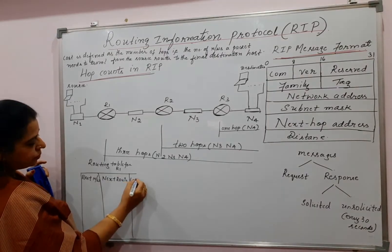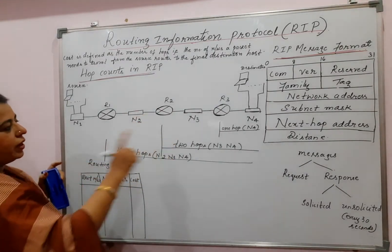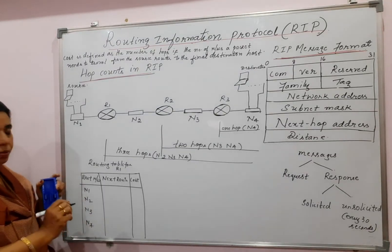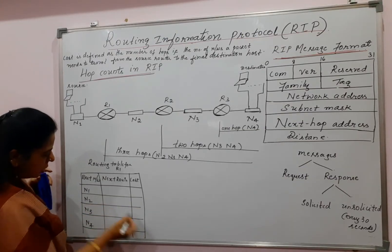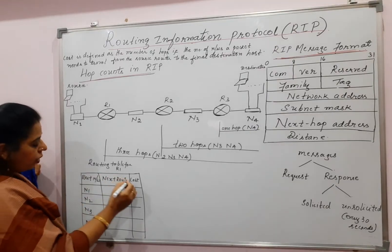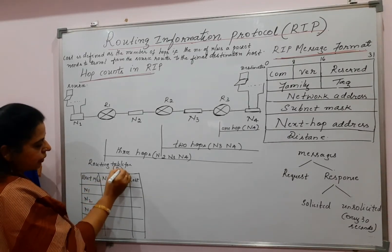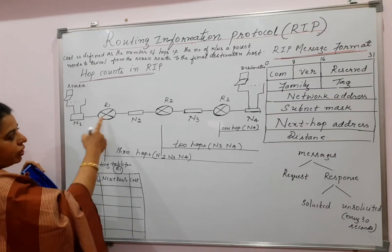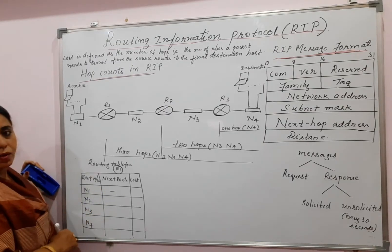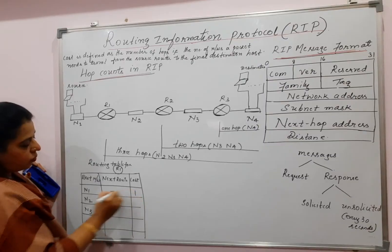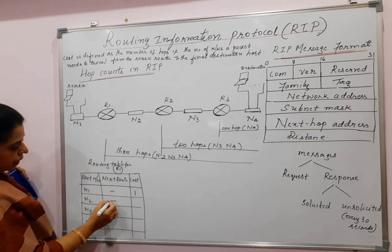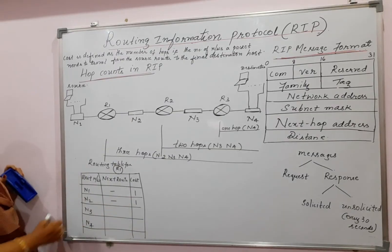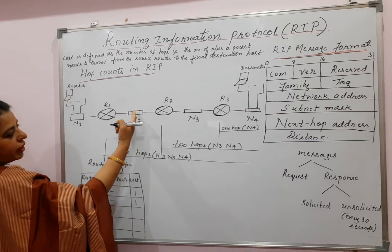You need to fill these three columns: destination network, next router, and cost. This network has four networks, so first and foremost you include all the possible destination networks. For R1 to reach network N1 — N1 is connected to router R1 itself, so the next router will be dash, and the cost will be 1. For N2, it is also connected to router R1, so next router is nil and the cost is again 1 — it takes one hop, meaning reaching that destination network is counted as one hop.